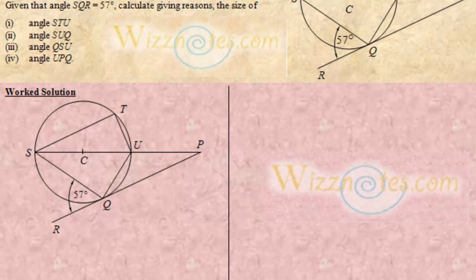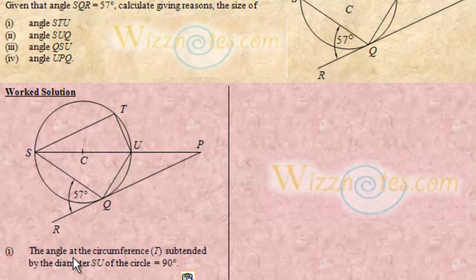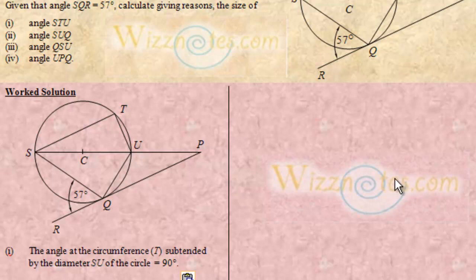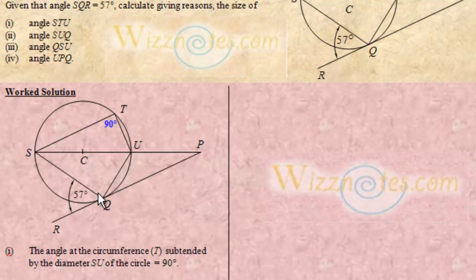So we can put a statement in for that rule. The angle at the circumference T subtended by the diameter SU of the circle is 90 degrees. It's also said that the angle in a semicircle is 90 degrees. So you can look at it as a semicircle or as the angle subtended by a diameter — in either case, this angle is 90 degrees. Now this angle here is also subtended by this diameter SU, so by the same reasoning, this angle is also going to be 90 degrees.